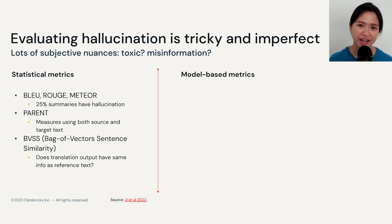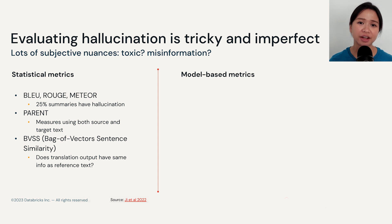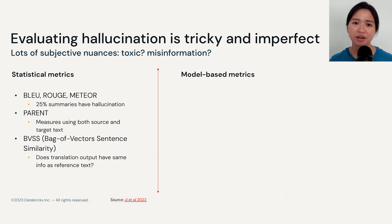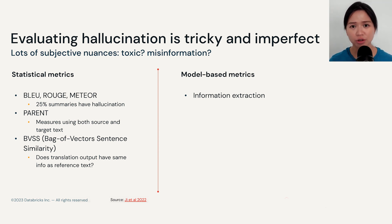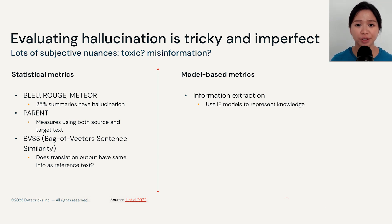The second category is model-based metrics, which means leveraging another model to help evaluate hallucination. However, any errors from those models also get propagated throughout. The first type is information extraction, which is especially useful for named entity recognition use cases where we are trying to extract knowledge and compare it with language model output.